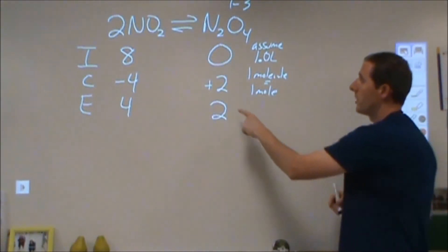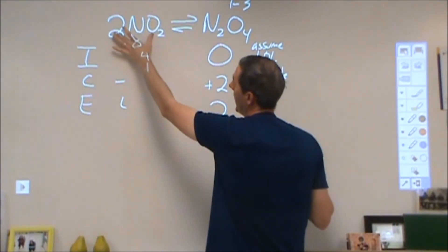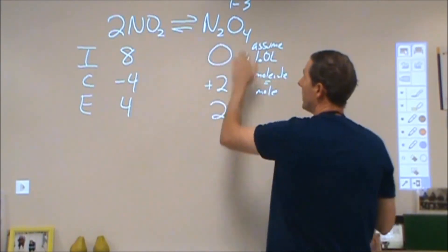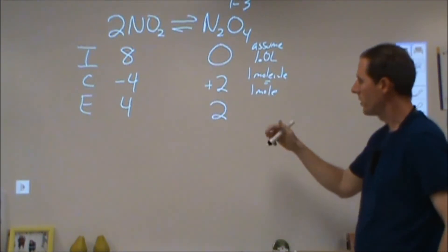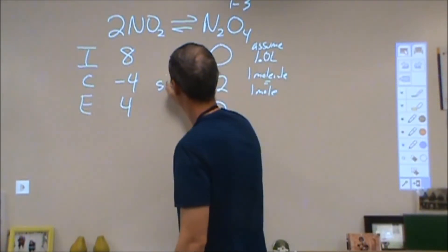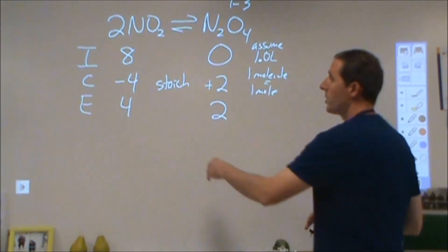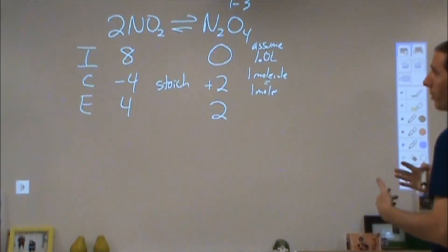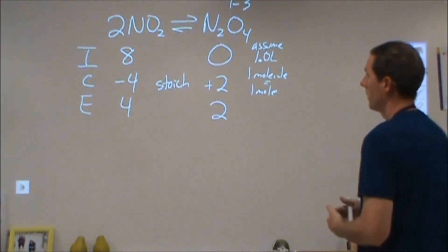That's interesting because those two numbers are not the same, and they have directionality in play. The NO2 is decreasing by twice the amount that the N2O4 increases. That ratio comes from the balanced reaction. This is a stoichiometry step. The stoichiometry limits how these two can change. As this changes, this changes by a proportional amount, and that proportionality is based off that balanced reaction.